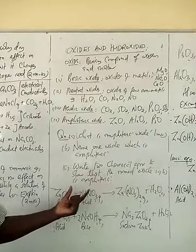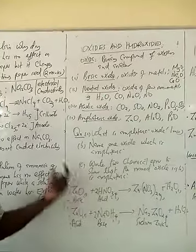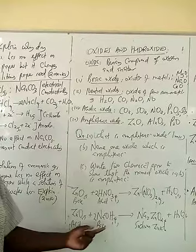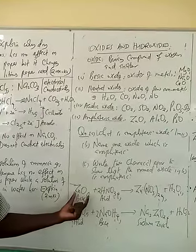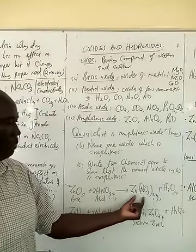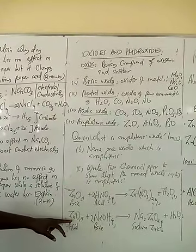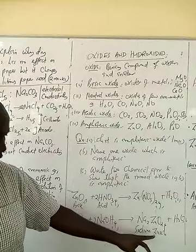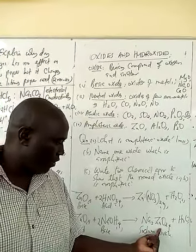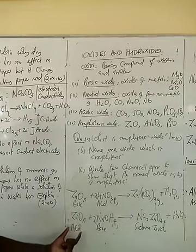Write two chemical equations to show that the named oxide is amphoteric. This will require you to write the equation for the reaction between the oxide with any acid and with strong alkalis — sodium hydroxide or potassium hydroxide. For example, zinc oxide plus nitric acid gives zinc nitrate plus water; in this case zinc oxide behaves like a base. Also, zinc oxide plus sodium hydroxide gives sodium zincate plus water — the zincate ion has a valence of two. In this case, sodium hydroxide being a base means zinc oxide is acting as an acid. The two equations show that zinc oxide is amphoteric.